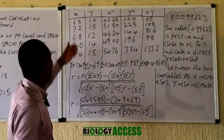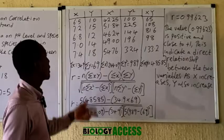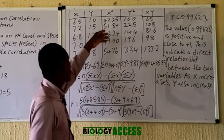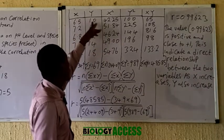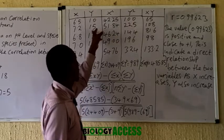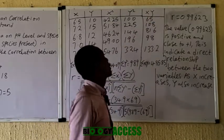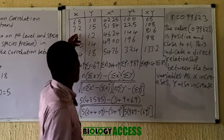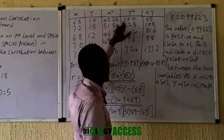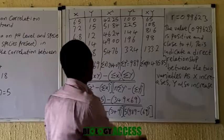The x and y values are already given. For x squared, you square each x value: 6.5 squared gives 42, 7.2 squared gives 51, and so on for all values. For y squared, 10 squared is 100, 15 squared is 225, and so on. For the xy column, you multiply each x by its corresponding y: 6.5 times 10, 7.2 times 15, and repeat for all five values.